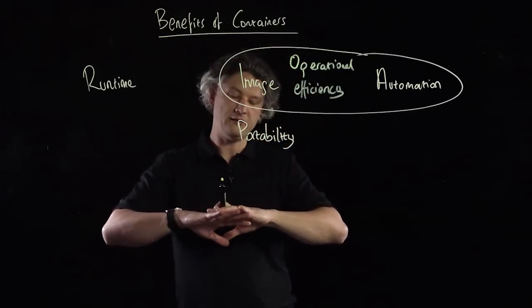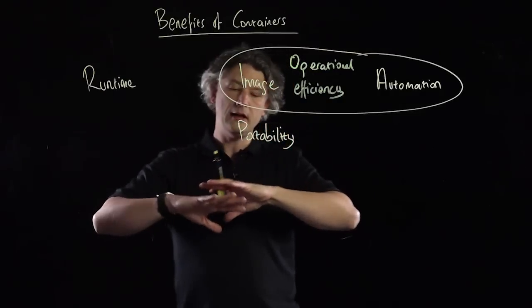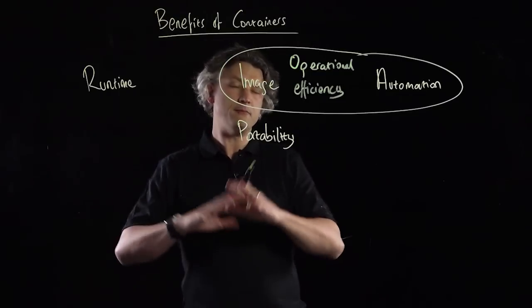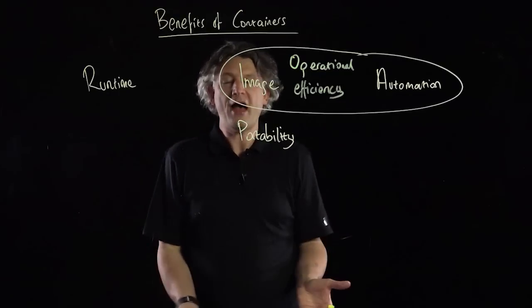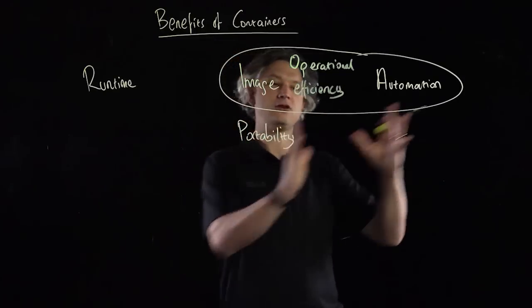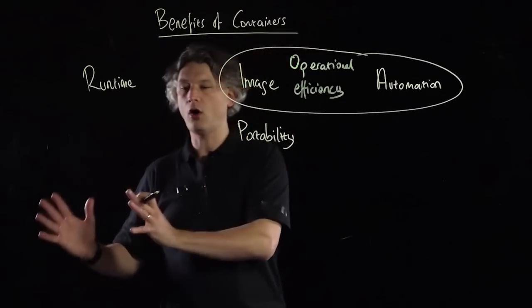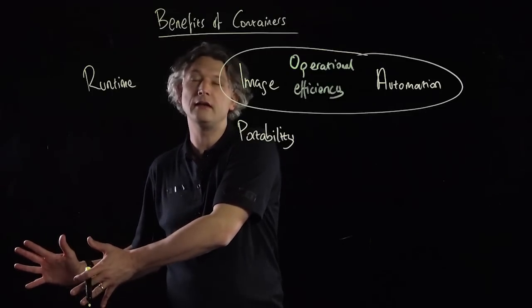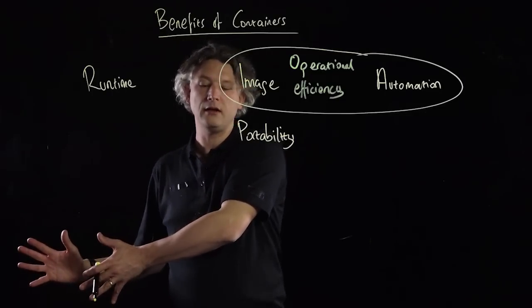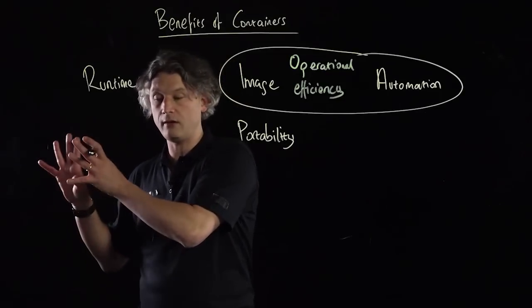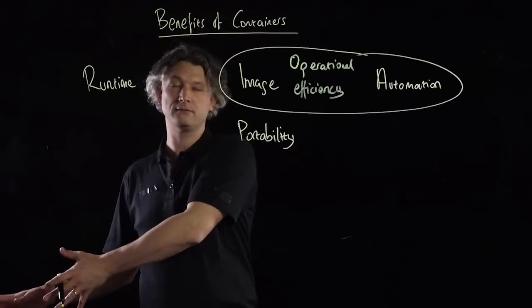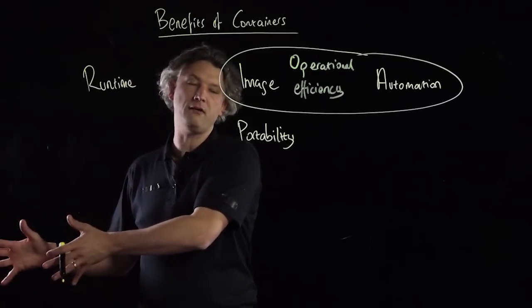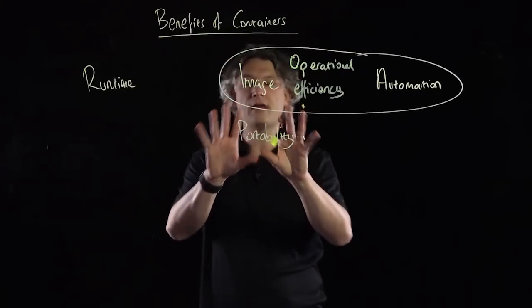The Docker image format facilitates this portability because the Docker image encapsulates all of the binary dependencies, a lot of the configuration, and some metadata — everything is packaged up so we can shift it around and run it on a system without worrying about what dependencies are installed on that system. All we need to think about is whether it's a well-configured system with Docker on it. That's portability.